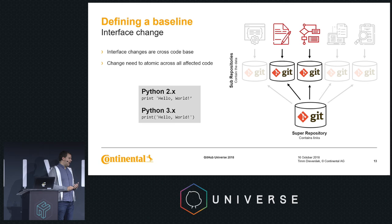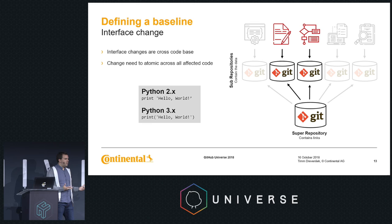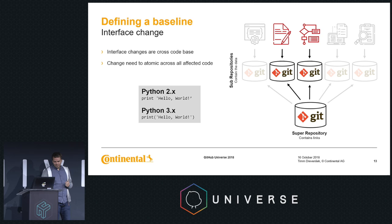Also within the multi-repository setup there is the interface change problem. Say today you have 20 different repositories and you want to switch from Python 2 to Python 3 — you'd nearly need to touch every line of code across all repositories. How do you deliver this atomically? You can deliver each repository separately, but in between deliveries there may be an inconsistent state across your repository setup.